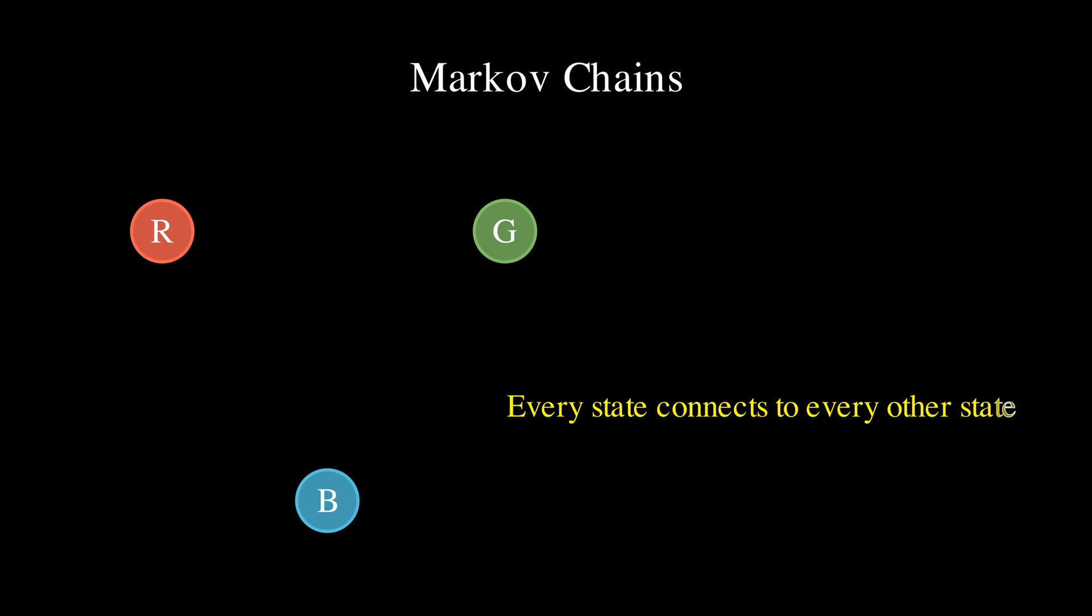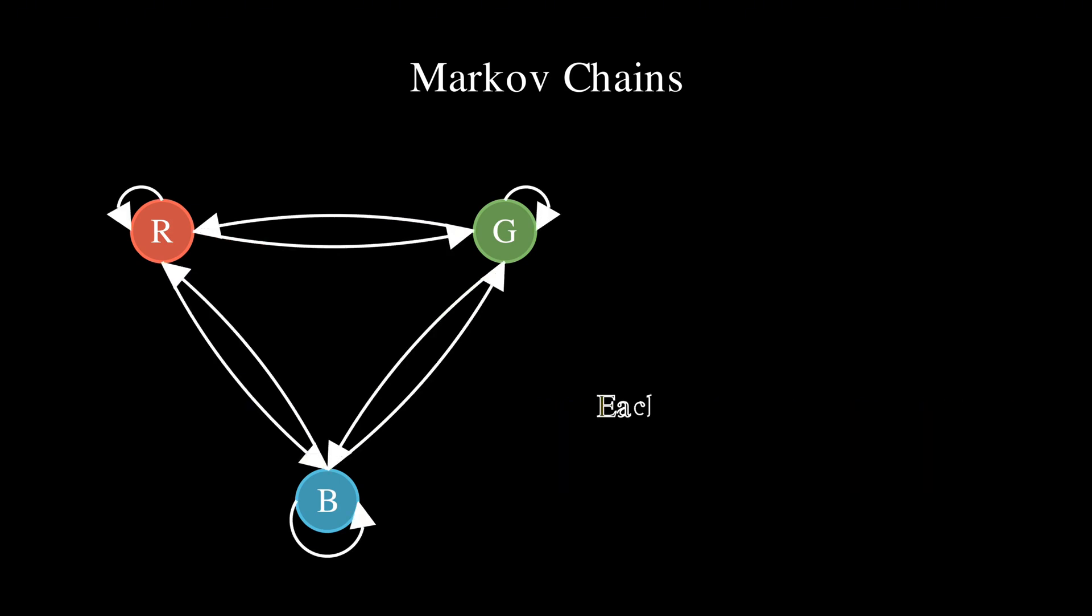Let's look at Markov chains. Imagine we have three possible states: red, green, and blue. Every state connects to every other state including itself, and each arrow also has a probability which shows what's the chance of moving from one state to the other or remaining in the current state.